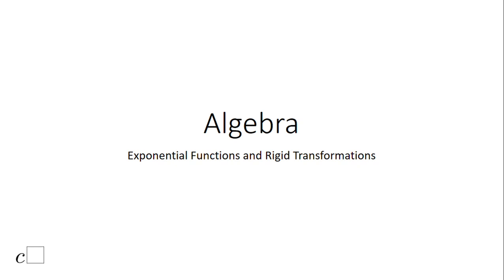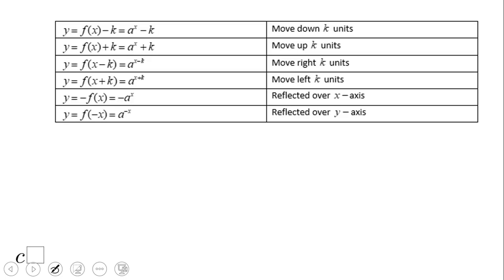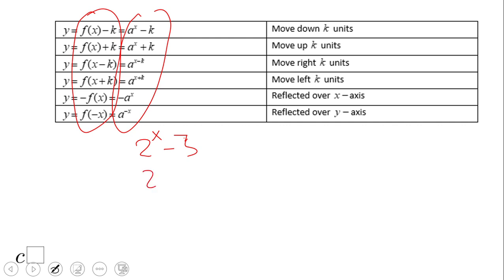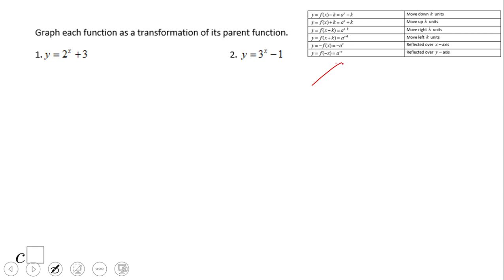Welcome back to C Square. In this video clip we're going to talk about exponential functions and how we use rigid transformations. This is the general form for exponential functions. For example, two to the x minus three moves the graph down, and two to the x plus a constant moves it up. These are all rigid transformations.